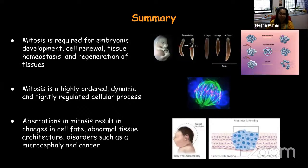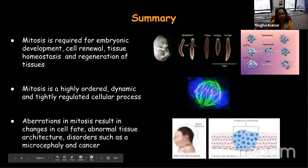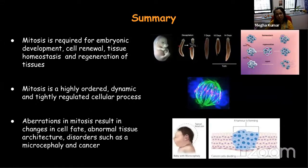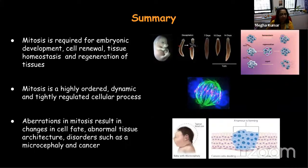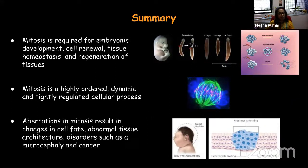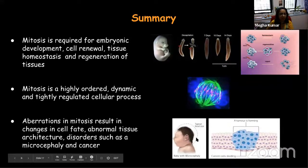In summary, mitosis is required for embryonic development — you can see a mouse embryo here. It is important for regeneration events and tissue homeostasis and repair. It's a very highly regulated dynamic process which we can study at the cellular level. Aberrations in mitosis can result in missed cell fate or abnormal tissue architecture, and in developmental disorder context, diseases like microcephaly and cancer.